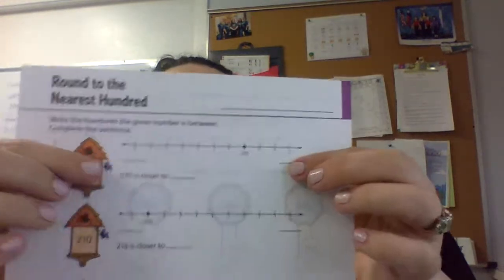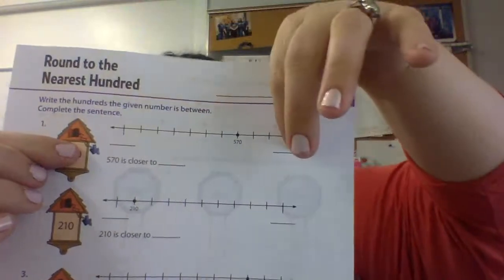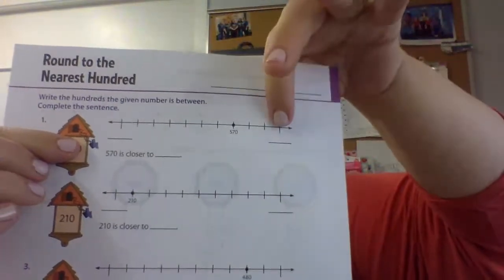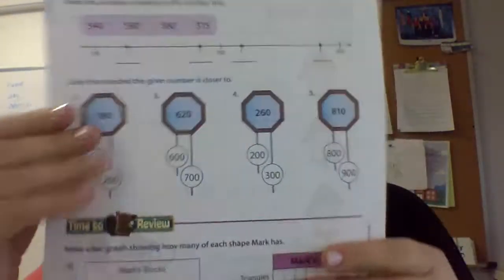If this is 500 and this is 600, where is 570 located? Is it closer to 500 or is it closer to 600? And your answer should be closer to 600. So you're going to write that right here. 570 is closer to 600. You're going to do all the way through and then the same thing here on the back.